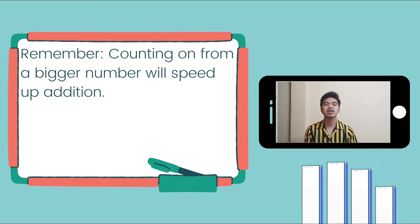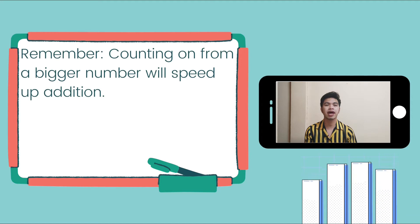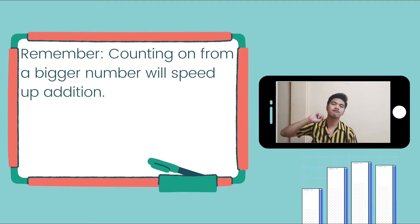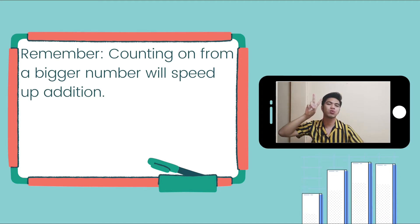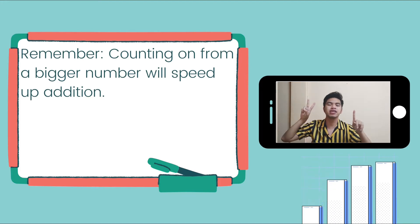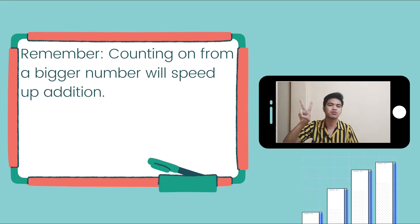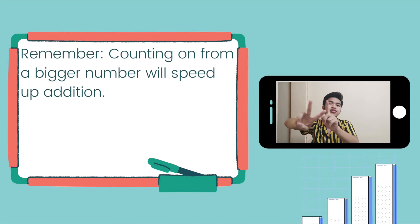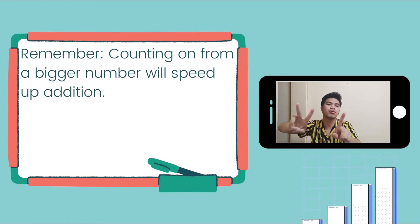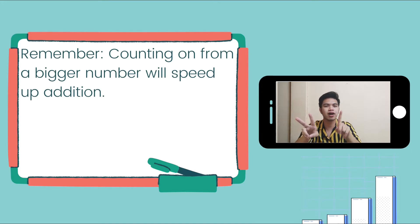Remember, when we are counting on from a bigger number, it will speed up addition. Here we have two and one. Since two is bigger than one, we will start first with two. One, two, and then we will continue counting to the next number, which is one. So, one, two, three. There are three flowers.